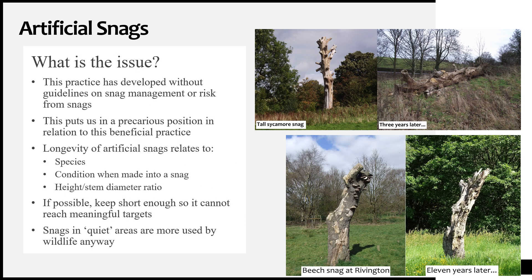Making artificial snags from trees that would otherwise be felled sounds like a great plan. What's the issue? Well, the issue is often that when a snag has been created, there needs to be some thought about the risks it still poses as a large standing piece of dead wood. The practice of creating artificial snags has arisen from industry members without any guidance on tree selection, snag management, or how to consider the ongoing risks from snags to people and property. Although one might hope that common sense would be applied, it's not uncommon to find tall artificial snags created within falling distance of main roads, pathways, park cafes and similar significant targets. Without any formal guidance or science on the risk of artificial snags, this puts us in a bit of a precarious situation.